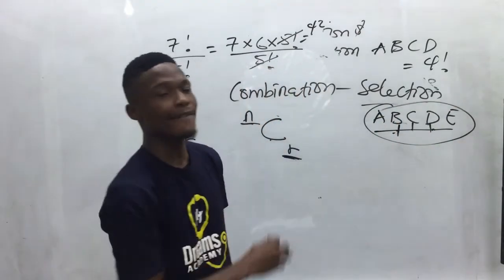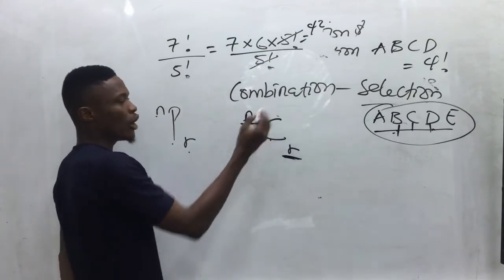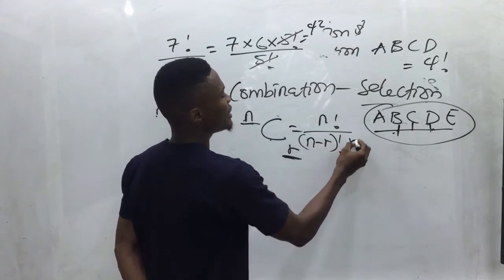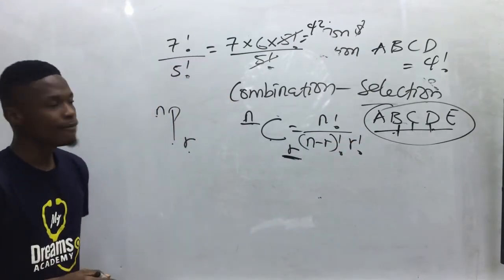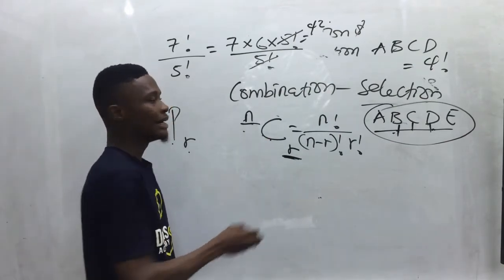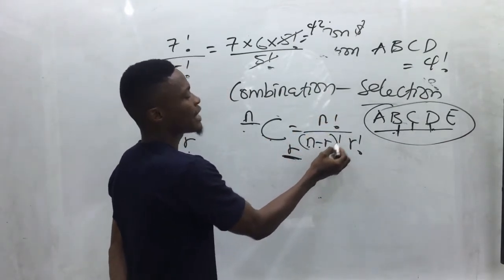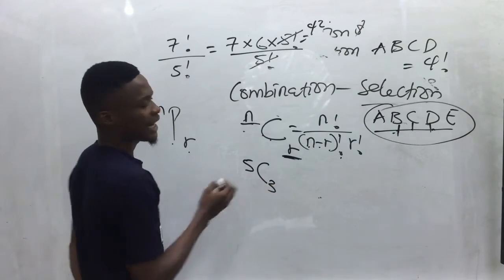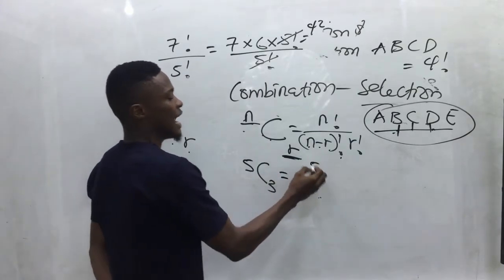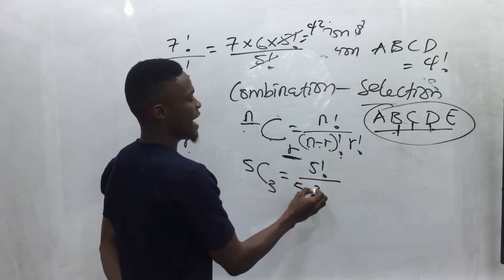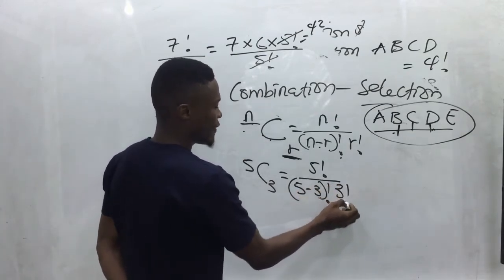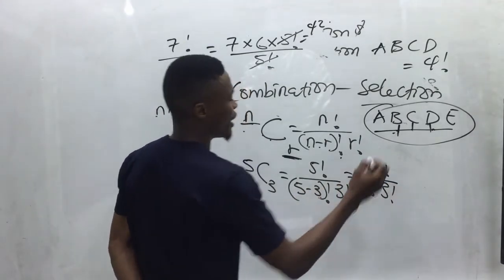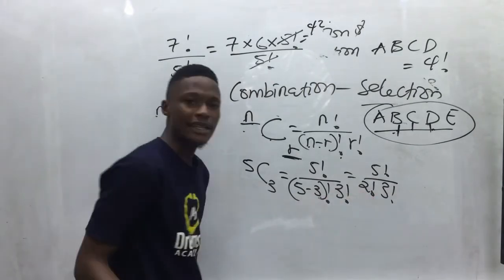The formula for combination is n factorial over (n minus r) factorial times r factorial. So five combination three equals five factorial over (five minus three) factorial times three factorial, which simplifies to five factorial over two factorial times three factorial.